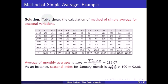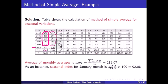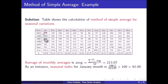The table shows the calculation of the method of simple averages for seasonal variation. The average of monthly averages (AAVG) is calculated by summing all monthly averages and dividing by 12. To get the sum for each month, we add all values across years. For January the average is 196.2, for February it is 194.8, and for March it is 187. These are the average consumption values for all months.